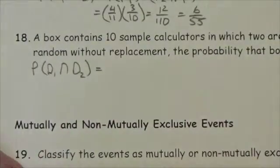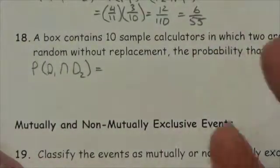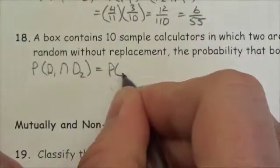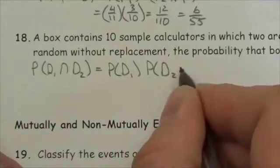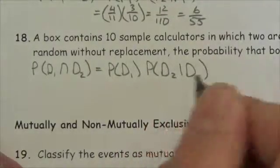We're not putting the calculators back in so the probability changes for the second event here. So this is going to be the probability that the first one is defective, multiplied by the probability the second one is defective given that the first one was defective.